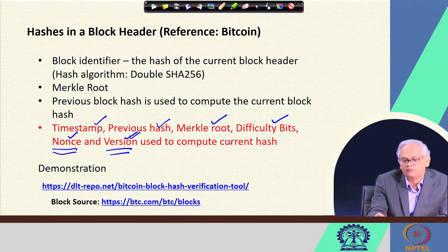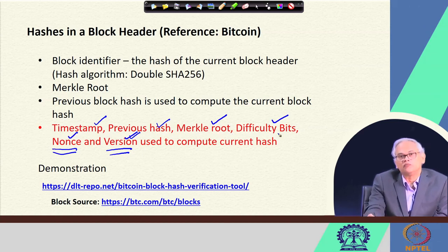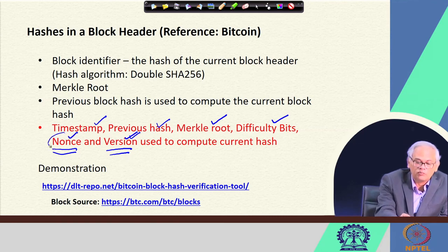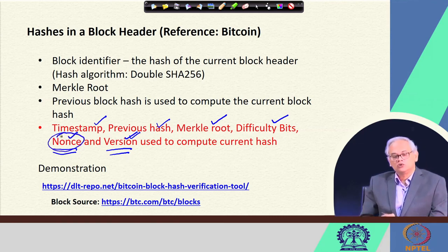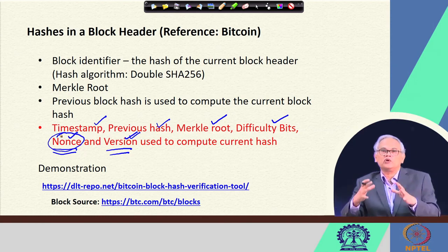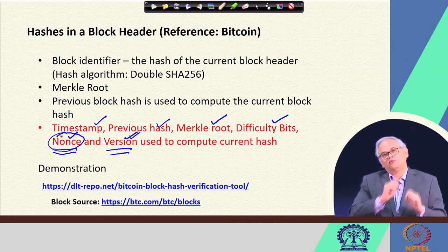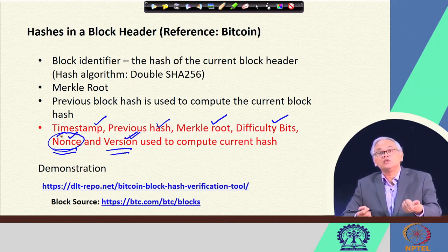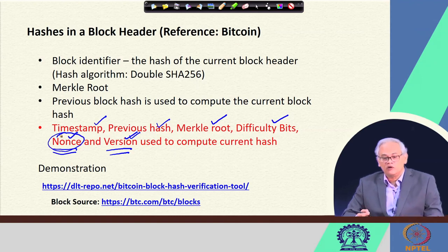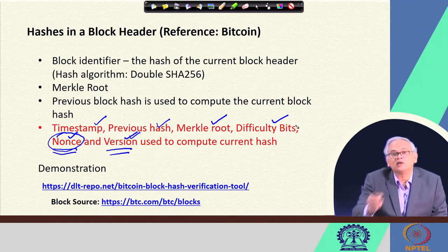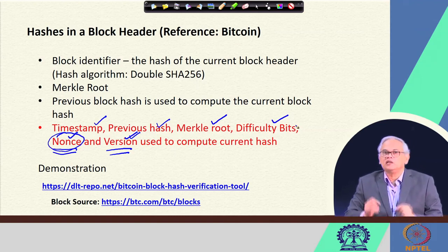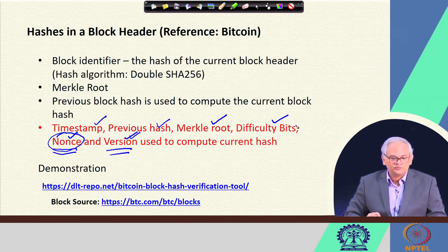The timestamp is known, the previous hash is known, the Merkle root is known, the difficulty bits are known, the version number is known. The process of mining has to come up with the nonce so that all of these, when taken together and hashed, result in a hash value satisfying the number of leading zeros determined from the difficulty bits in the block header.